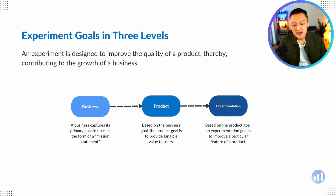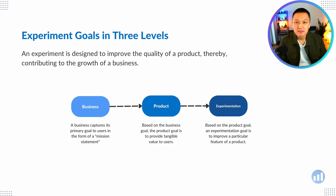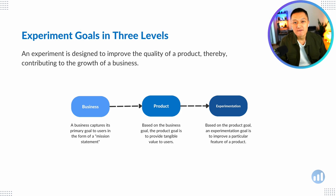The business level would be more like a mission statement — what is the primary goal that the business is trying to achieve for users? Within a business there are multiple products and services, each with its own more tangible goal. And then there's the experimentation goal, which is that within a product, there are various experimentations happening in order to refine and improve the process for users. When answering an A-B testing question, make sure you explain it in terms of these three levels: business, product, and experimentation.